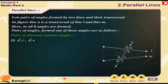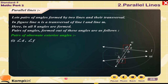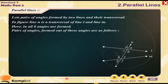Pairs of alternate interior angles: 1. Angle C and angle E. 2. Angle B and angle H. Pairs of alternate exterior angles: 1. Angle D and angle F. 2. Angle A and angle G.